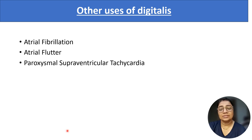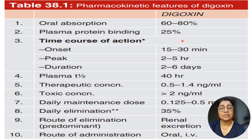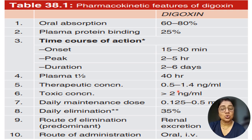Other uses of digitalis beyond CHF are atrial fibrillation, atrial flutter, and paroxysmal supraventricular tachycardia. Pharmacokinetics of digoxin: oral absorption is 60–80%, plasma protein binding 25%, onset of action 15–30 minutes, peak achieved after 2–5 hours, total duration 2–6 hours, and plasma half-life is 44 hours — a long half-life. Therapeutic concentration is 0.5 to 1.4 nanogram per ml; if more than 2 nanogram per ml, it is toxic. Daily maintenance dose is 0.125 to 0.5 mg, daily elimination is 35%, route of elimination is renal, and route of administration is oral or IV.